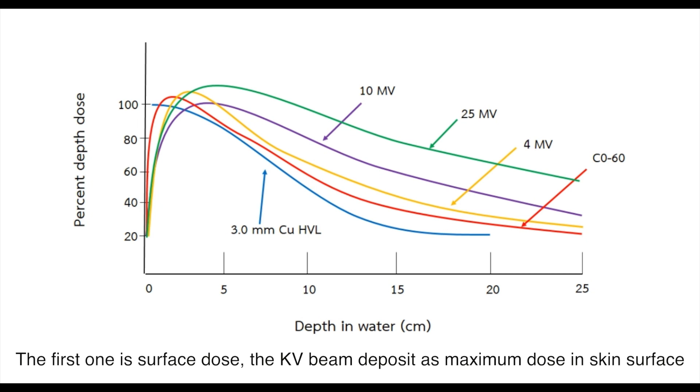The first one is surface dose. The kilovoltage beam deposits its maximum dose at the skin surface. A cobalt-60 beam, which is quite a low megavoltage energy beam, only deposits about 30%.